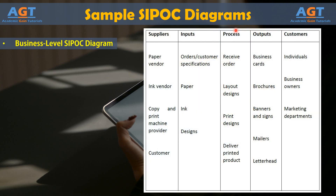Here we are looking at a business-level SIPOC diagram sample. This diagram shows the SIPOC for a mid-sized printing company. The printing process is initiated based on orders or customer specifications. Other inputs needed for the printing process — like paper, ink, and designs — are collected from suppliers. The suppliers are a paper vendor, ink vendor, copy and print machine provider, and the customer himself, who supplies designs and sometimes materials.